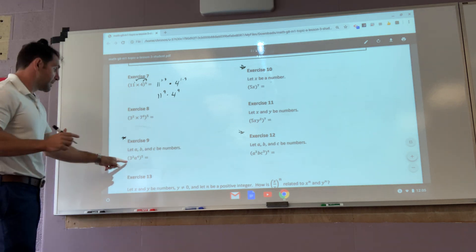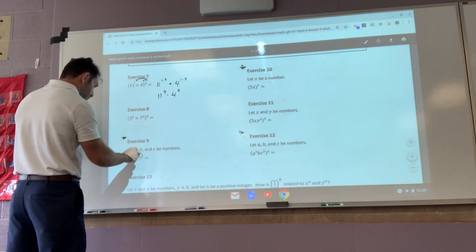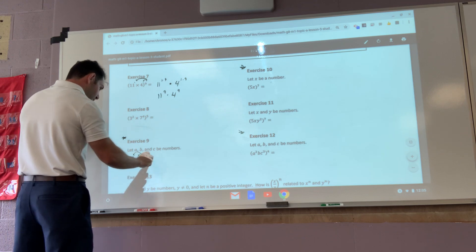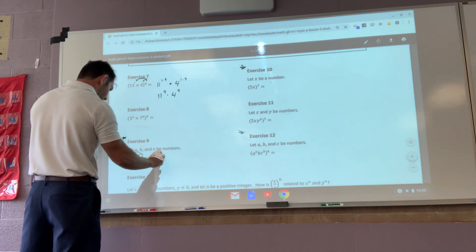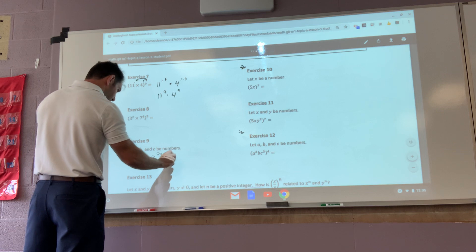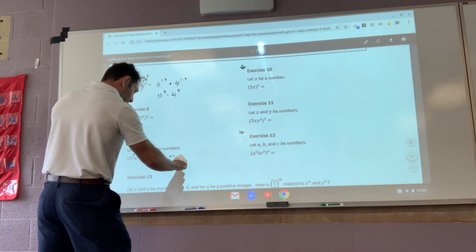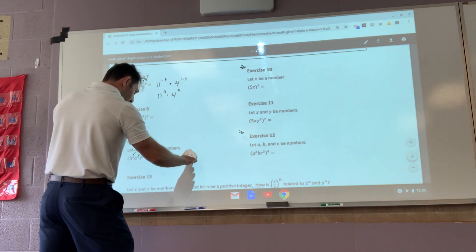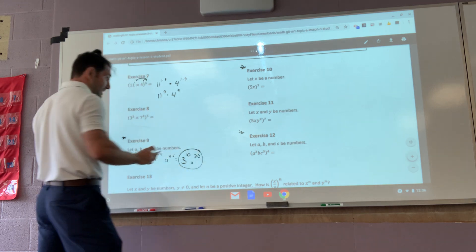Okay. This one's pretty easy. So I distribute it to the exponents. Three, two times five. Five, a, four times five. That gives me three to the tenth multiplied by a to the twentieth. That's an easy one.